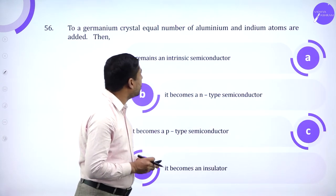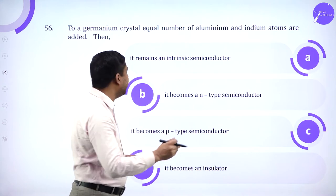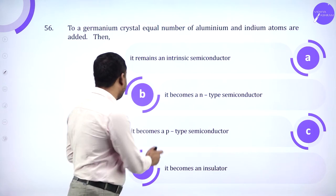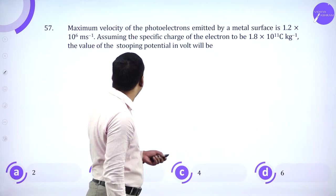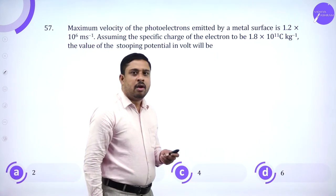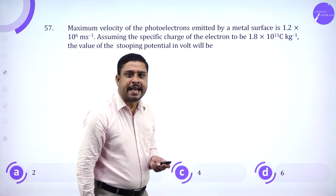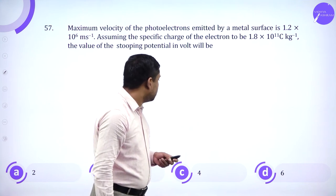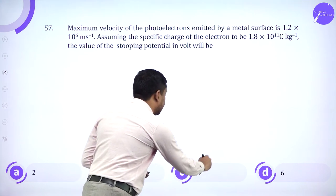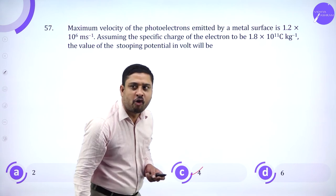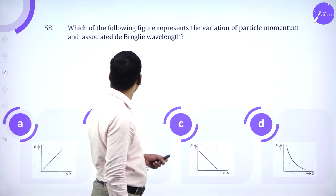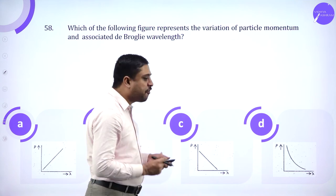To germanium, equal number of aluminium and indium atoms are added, so it becomes a P-type semiconductor. Already done in the previous class, so 4 holds will be the answer.